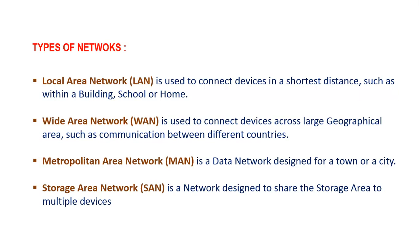Next we are going to discuss about types of networks. Local area network — it's when multiple devices within a building or within a limited geographical area are connected to have communication or to share resources within the network. This is a local area network.